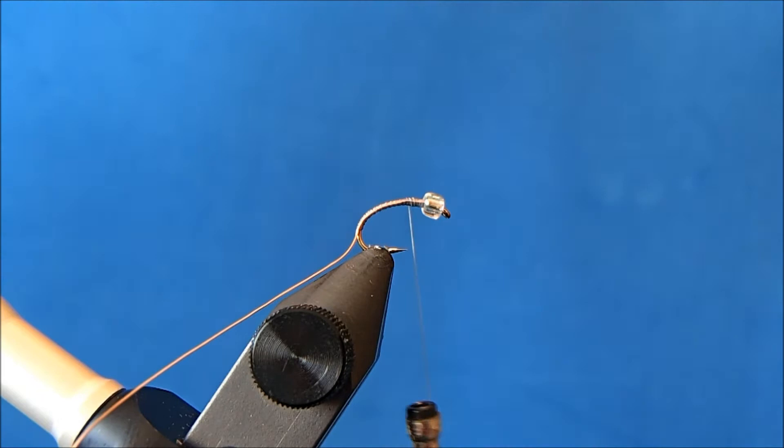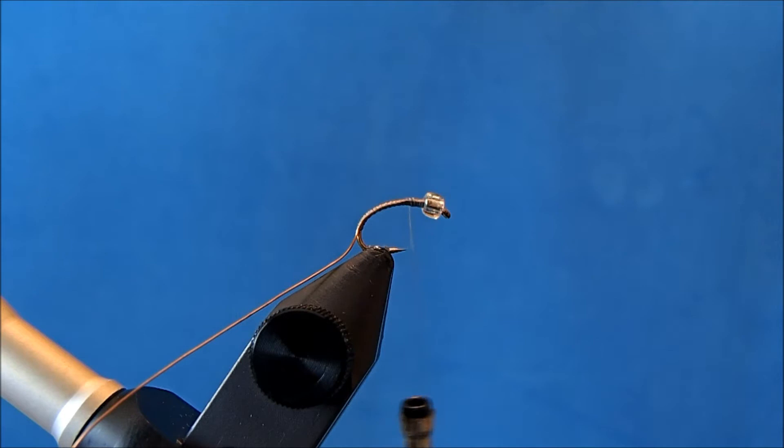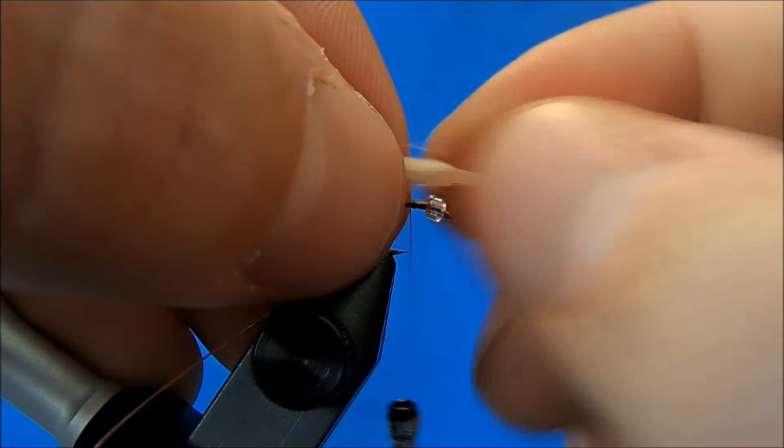This will have a wing and a post to it and I think the original calls for deer hair. I'm going to use in its place a CDC puff. So I'll wet my fingers just slightly and that will help get all those tips together to tie in.